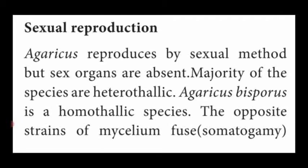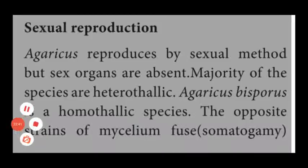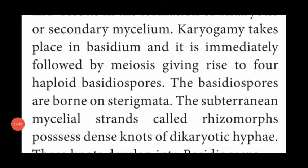Here also the two strains of mycelium fuse together to form a diploid condition of nucleus, and that mycelium is named dikaryotic mycelium or secondary mycelium. Then the diploid nucleus — a process named karyogamy — takes place in the basidium, the spore-bearing organ, and undergoes meiotic cell division to produce four haploid basidiospores.